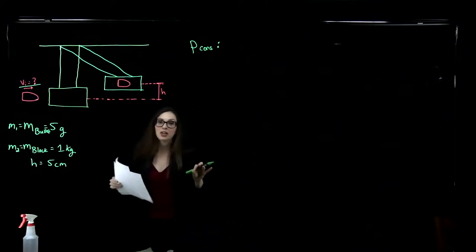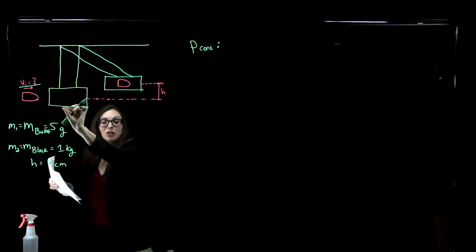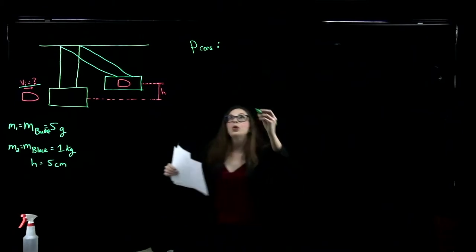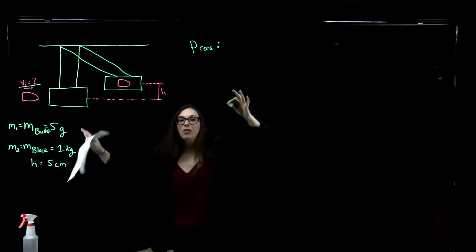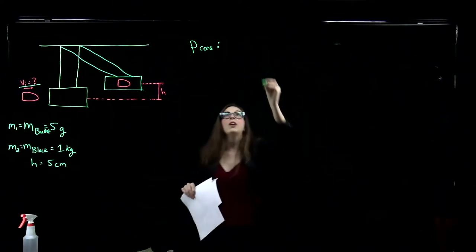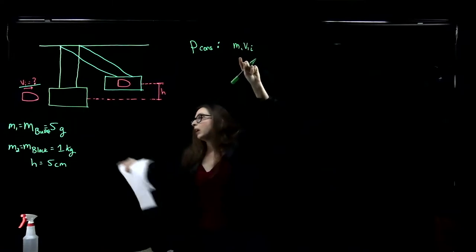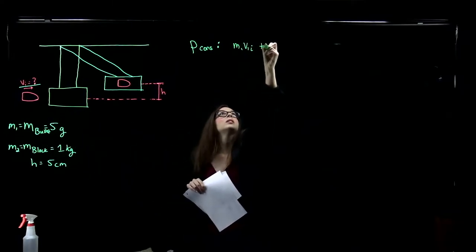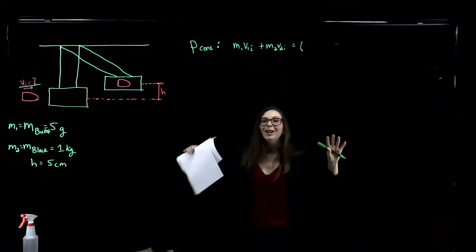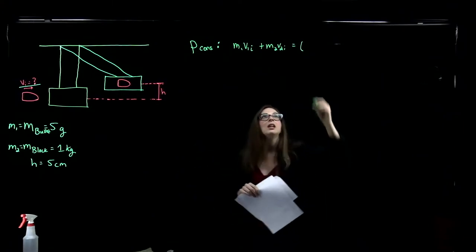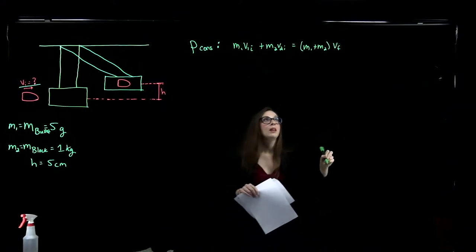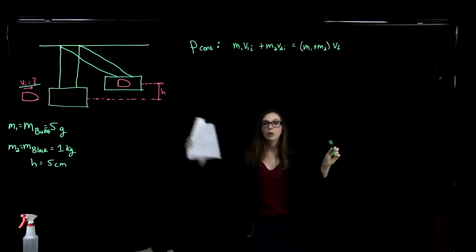We're going to look at the conservation of momentum right before and immediately after the collision. For conservation of momentum, the sum of all initial momenta must equal the sum of all final momenta after the collision. We have M1V1_initial plus M2V2_initial equals, after the collision, those two objects are now one object — this is our inelastic collision, they smoosh together and move as one — so the mass is M1 plus M2 times V_final. This covers the before and after of our initial collision.